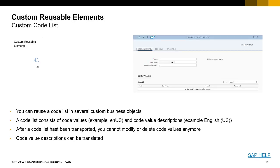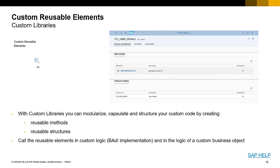Another application SAP provides for extensibility is custom reusable elements. Here you can create custom code lists — for instance, if you have particular drop-down menus you'd like for a particular field, you can define it here, in different languages as well. You can also define custom libraries for reusable methods across your developments, as well as reusable structures. You can call these reusable elements and structures in your custom logic implementations and in the logic of any of your custom business objects.